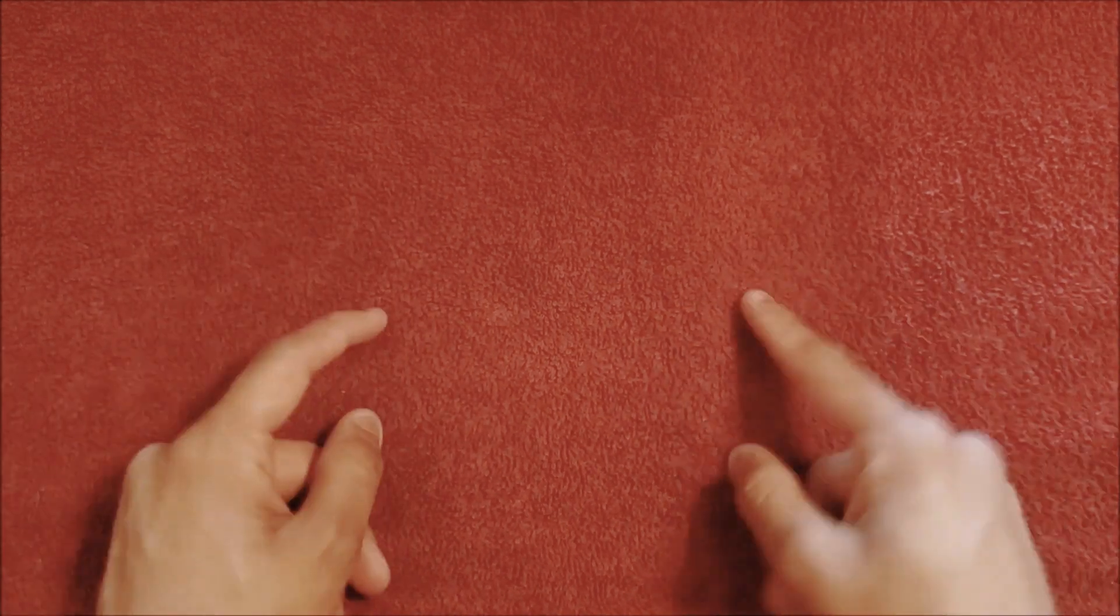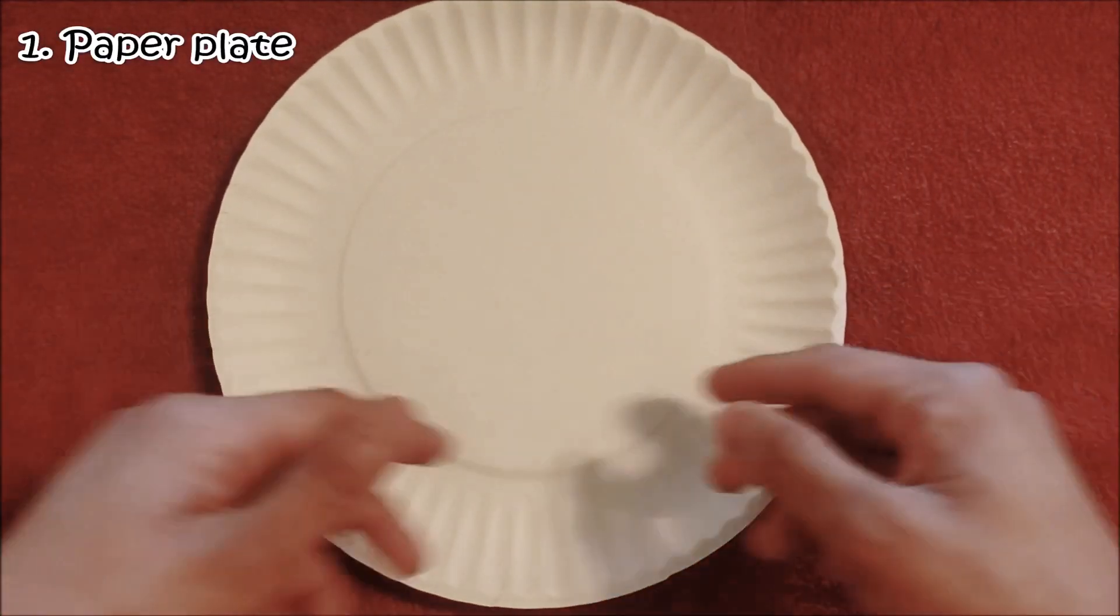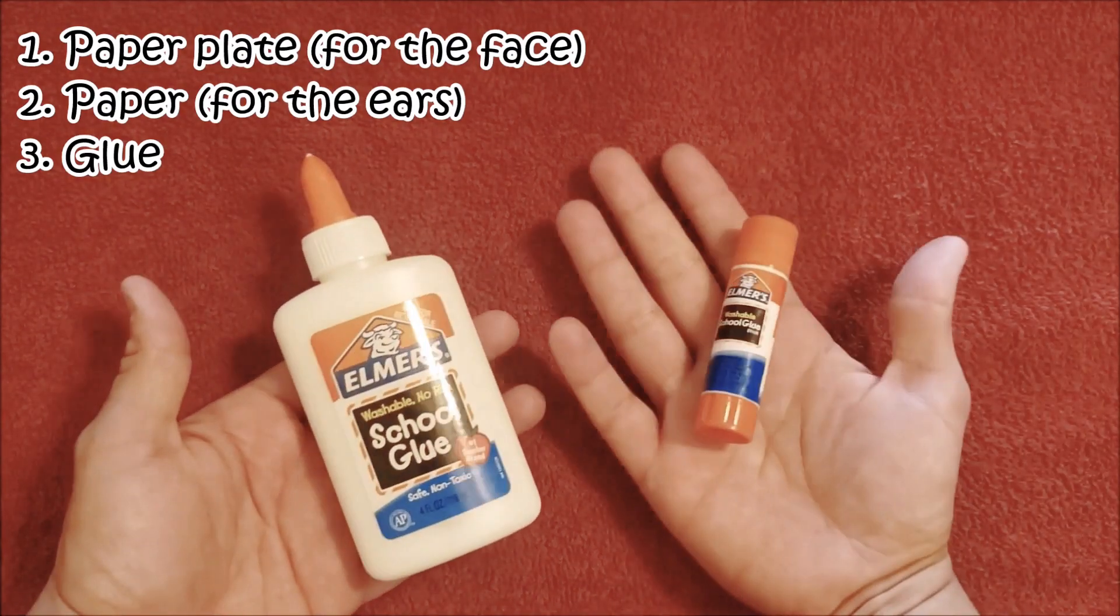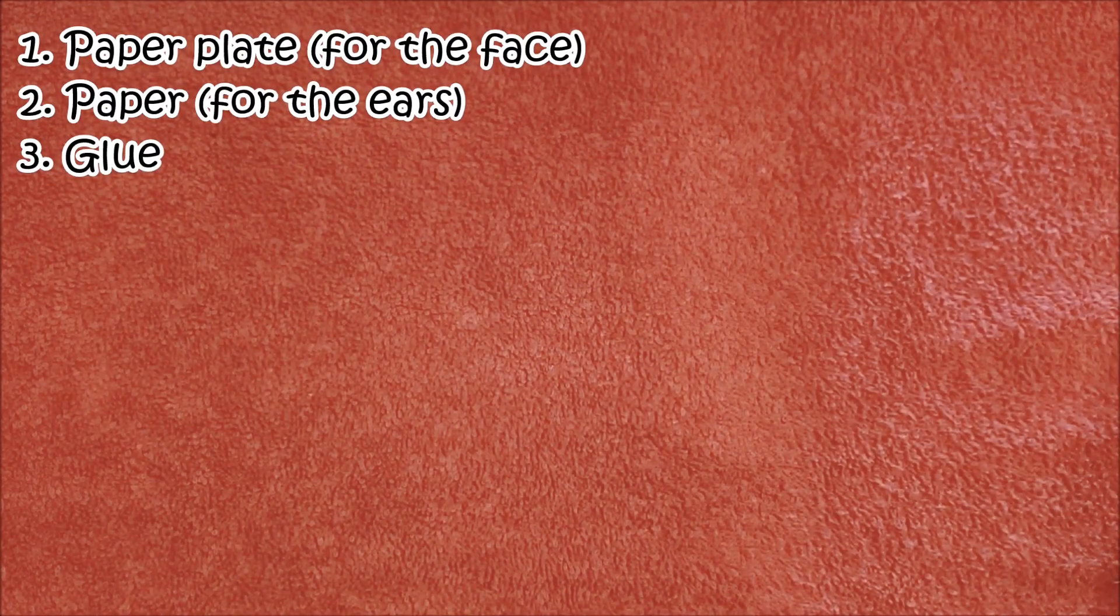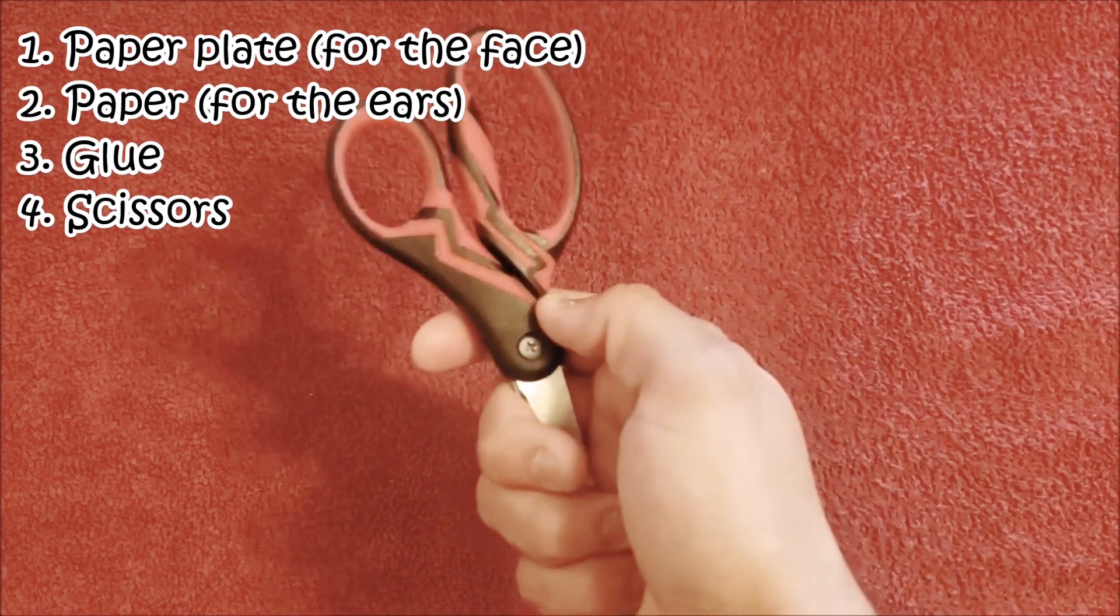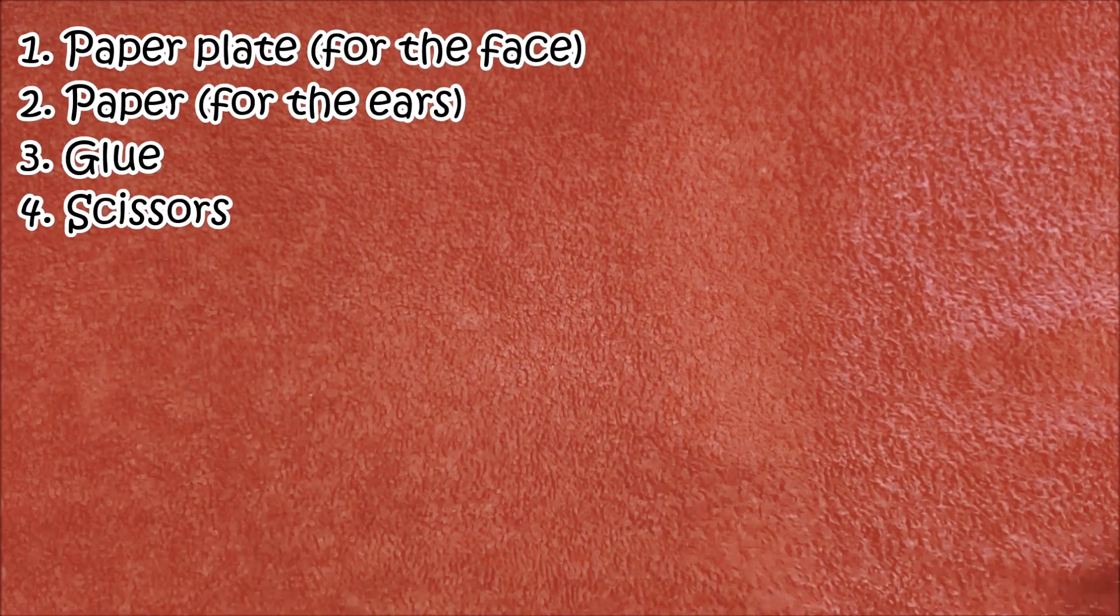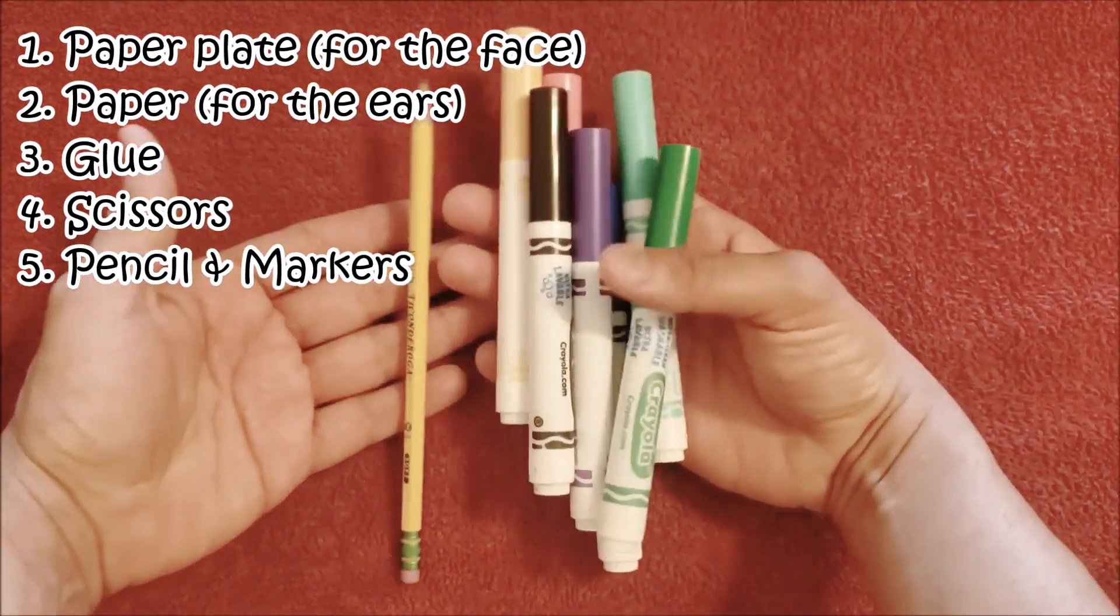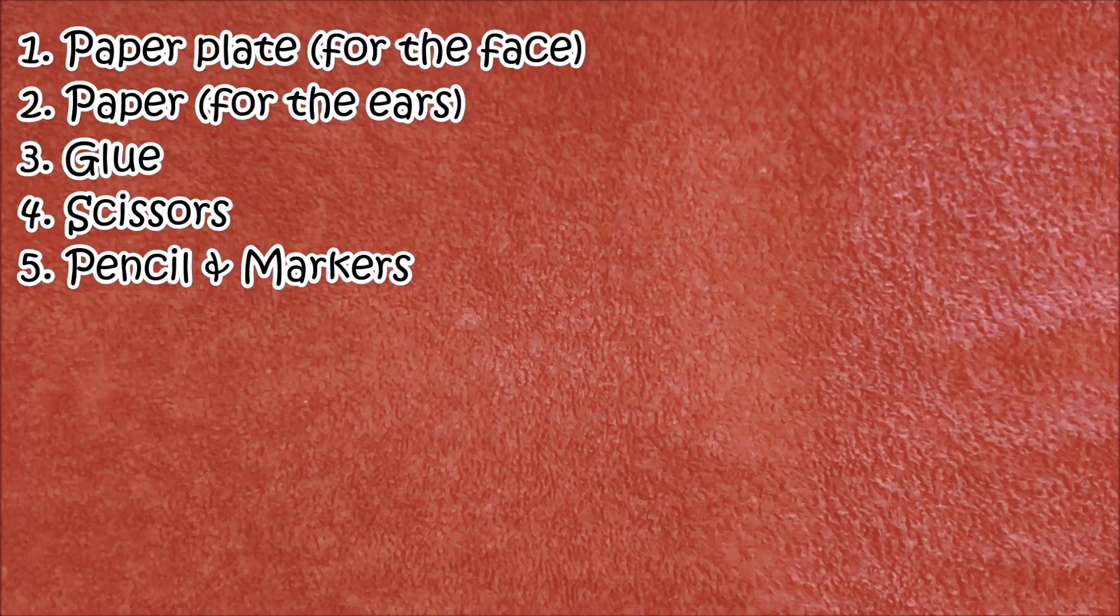Hi friends, welcome back. So let me show you guys the materials we're going to need. We're going to need a paper plate—this will be the bunny's head. We are going to need some paper for the ears. We got glue, glue stick, whichever ones you have around. Some scissors—make sure you have an adult help you with this part. And of course, we need pencil and markers. You'll see why the pencil. So let's begin.